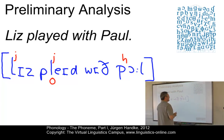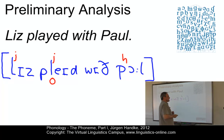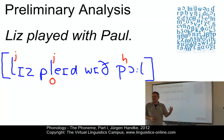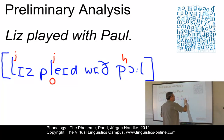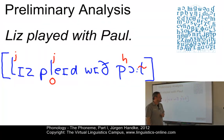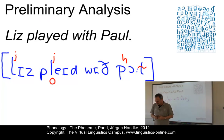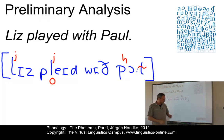And finally, the last element — this alveolar lateral — is different again. It's not palatalized anymore, but it is velarized, which you can mark by this additional diacritic. So this is the first result of our analysis.